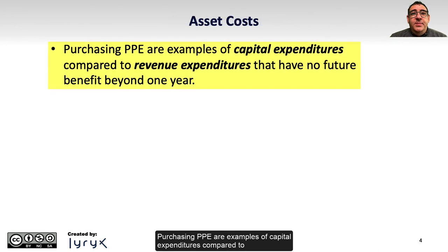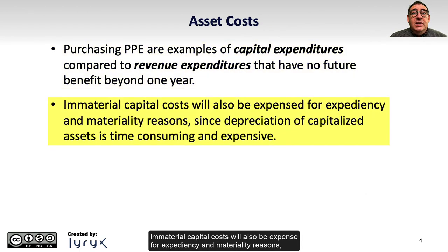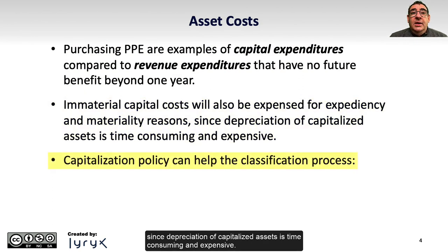Purchasing PPE are examples of capital expenditures, compared to revenue expenditures that have no future benefit beyond one year. Immaterial capital costs will also be expensed for expediency and materiality reasons, since depreciation of capitalized assets is time-consuming and expensive.